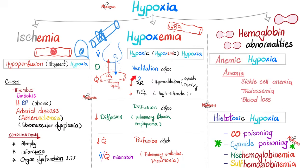Ventilation defects: maybe you're not breathing because you are intoxicated with opioids, which inhibit your respiratory center in the medulla, or maybe because you're morbidly obese and cannot breathe deeply — so you're hypoventilating. Anytime you hypoventilate, oxygen goes down, giving hypoxemia. But carbon dioxide in the blood goes up, causing respiratory acidosis due to hypercapnia. Or maybe you're breathing, but there is less oxygen in the air, such as on top of a mountain.